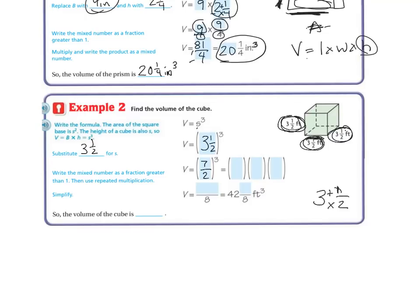So 3, 7 over 2 cubed is the same thing as saying 7 over 2 times 7 over 2 times 7 over 2. And I get, on the bottom, I get 2 times 2 times 2, which is 8.